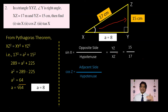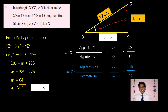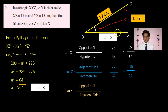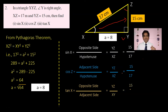Continuing Problem 2: Cos Z = adjacent/hypotenuse = YZ/XZ = 15/17. Tan X = opposite/adjacent = YZ/XY = 15/8.